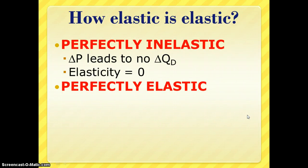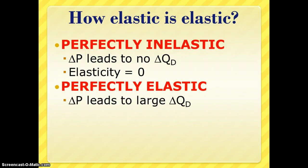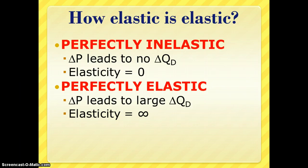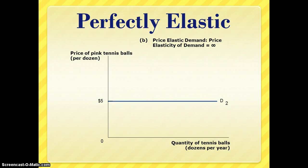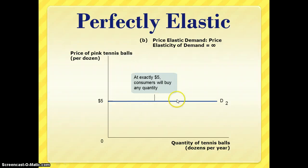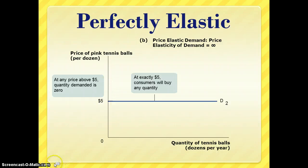The other extreme is perfectly elastic, where a change in price leads to an infinite change in quantity — any change in price will lead to a massive change in quantity demanded, so the denominator of your equation is essentially zero. This is signified by a perfectly horizontal demand curve. At $5, consumers will buy as much of the good as they want; below $5, they'll purchase an infinite amount; above $5, they won't purchase anything at all. A memory trick: this horizontal line looks like the midpoint of a capital E, and E stands for elastic.